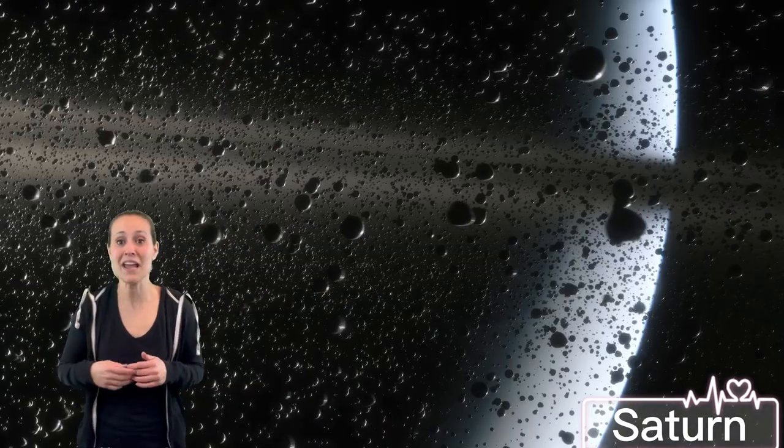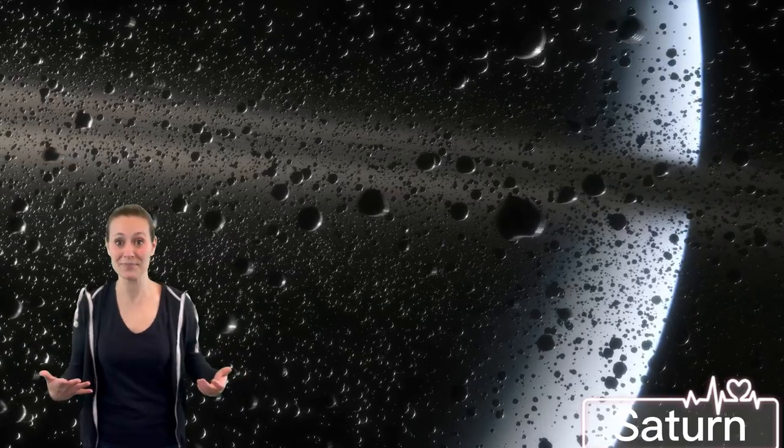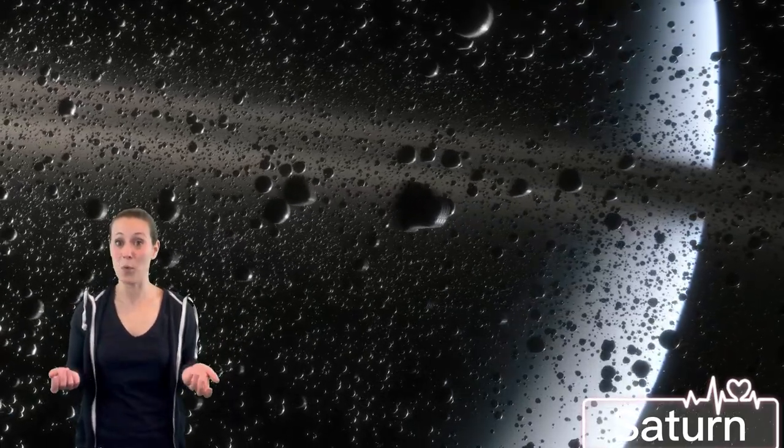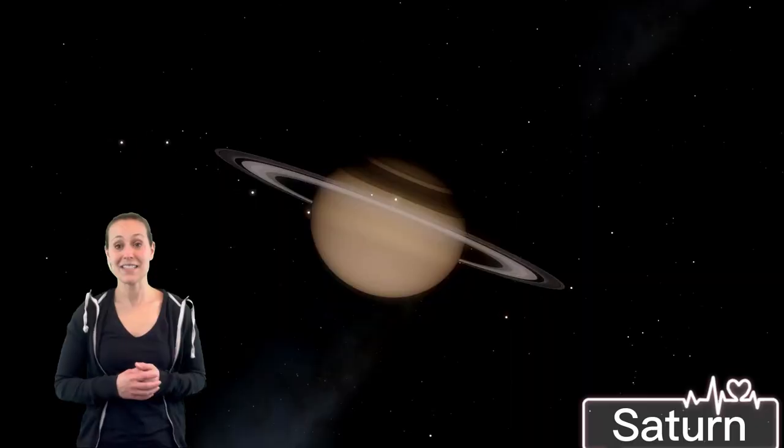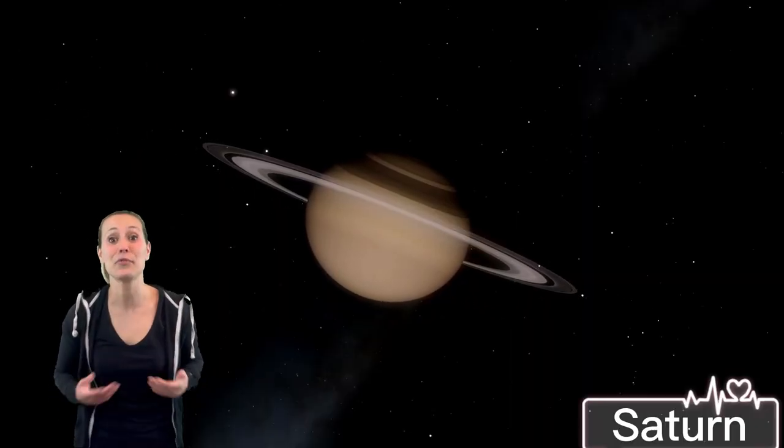Saturn has sparkly rings around it. The rings are made up of billions of bits of icy rock. Some of the bits of rock are as tiny as a speck of dust, and some of them are as big as a huge mountain. From far away, it kind of just looks like one ring, but it's actually thousands of rings of this icy rock. Saturn has at least 53 moons.